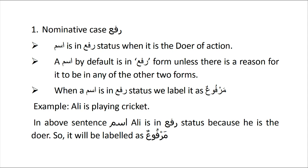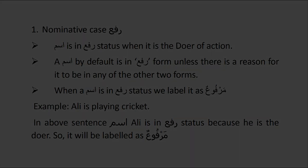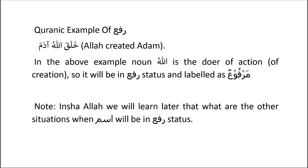Let's talk about nominative case in more detail. An ism is in rafa status as a fa'il when it is the doer of the action. By default, ism is in rafa state — naturally in marfu state — unless there is a reason for it to be in any of the other two forms. When an ism is in rafa state, we label it as marfu-un. Example: Ali is playing cricket — who is playing? Ali. Ali is in rafa status because he is the doer. Quranic example: 'Khalaqa Allahu Adama' — Allah created Adam. Allahu is the doer of the action, so it is in rafa status and labelled as marfu-un.